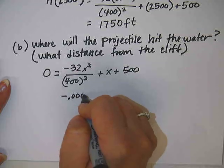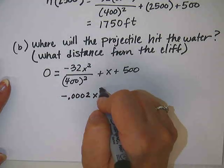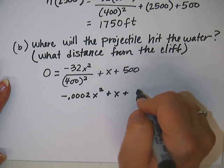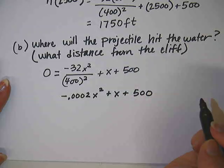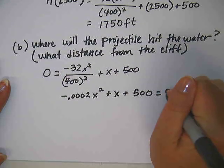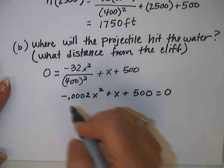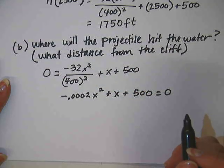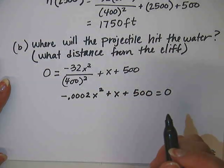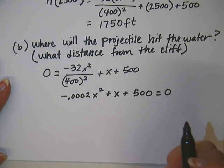I went ahead and put this whole thing in my calculator and just got a decimal for it. I don't know if that makes it easier or harder, but that's what I decided to do. So this gives me negative 0.0002 x squared plus x plus 500. So now I have a quadratic I'm trying to solve and obviously I don't want to try and factor this.